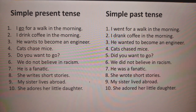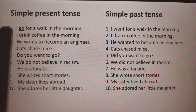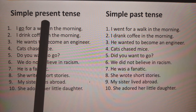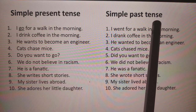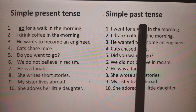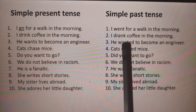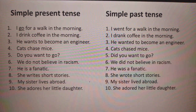Hello everyone. Today we are going to learn how to change sentences from simple present tense to simple past tense. Let us learn with some examples. It is very simple, children — we just have to change the verb to its second form, or we can say to its past form. Let us see some examples.